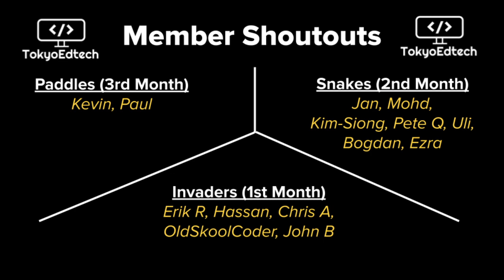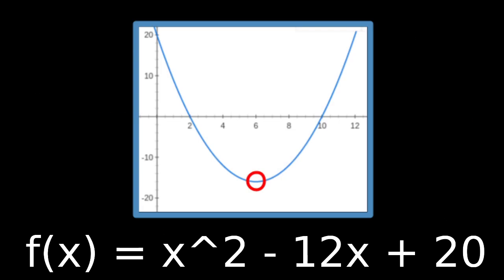Today we're going to be taking a look at minimization. Minimization is where we have a function and we want to find the minimum value. So this is an arbitrary function I just came up with: x squared minus 12x plus 20. I chose this example because we only have one variable, x, and then I'll do another example later with two variables to show how that works.